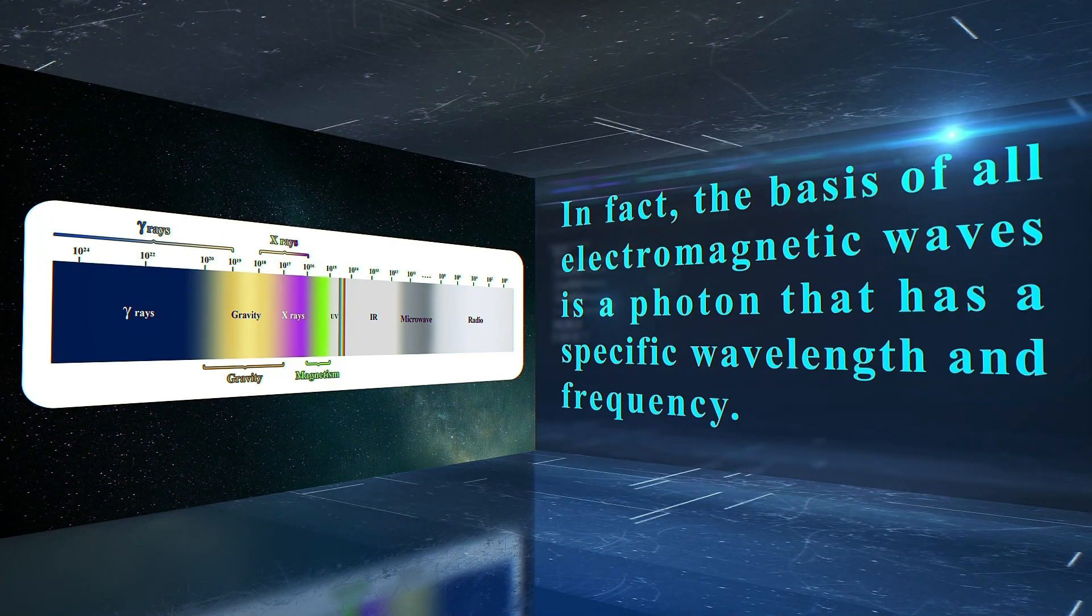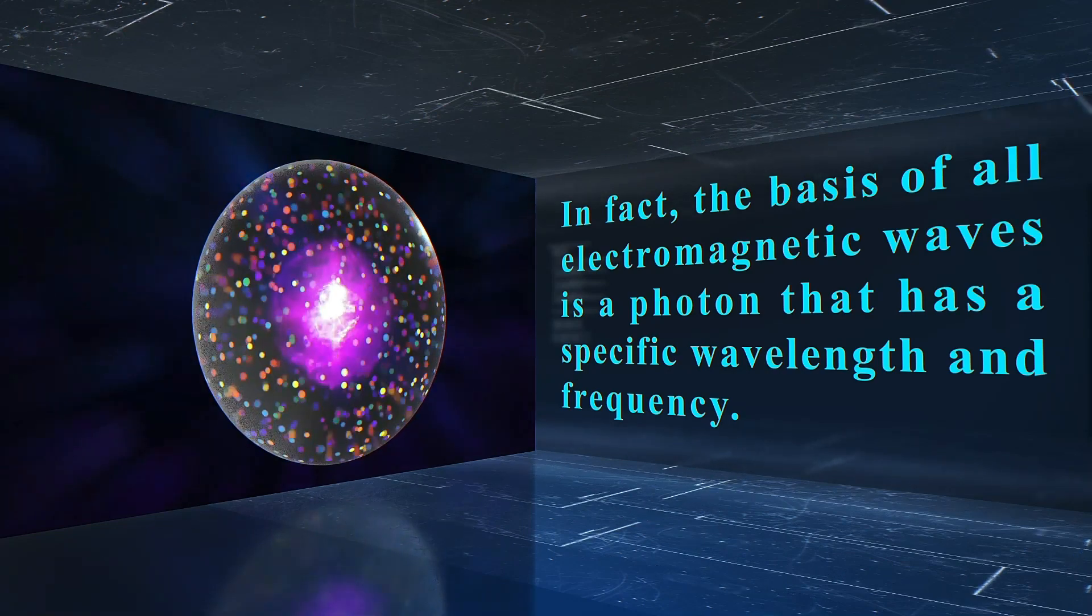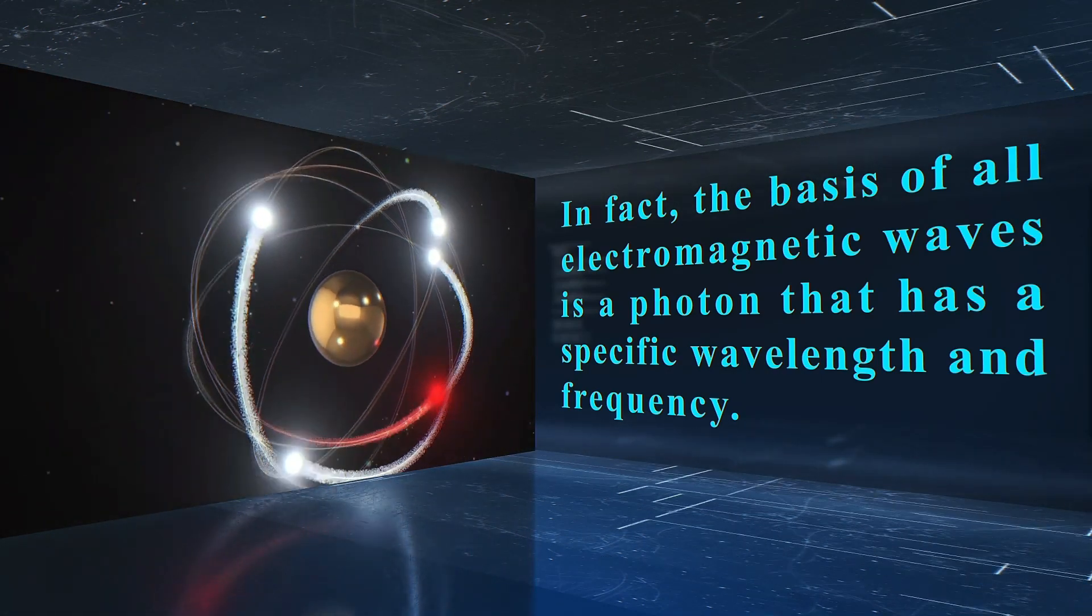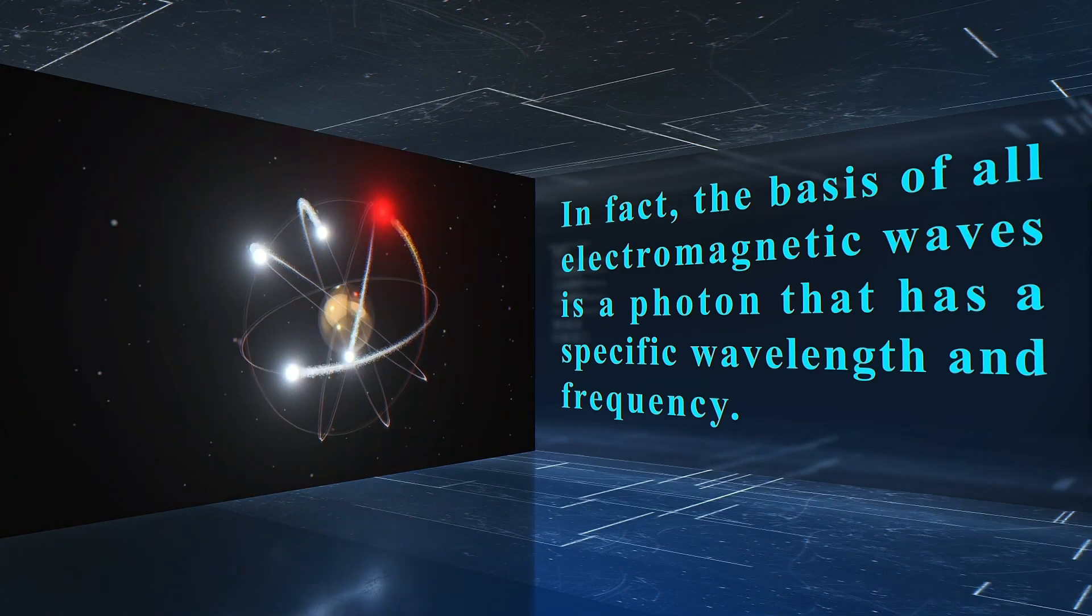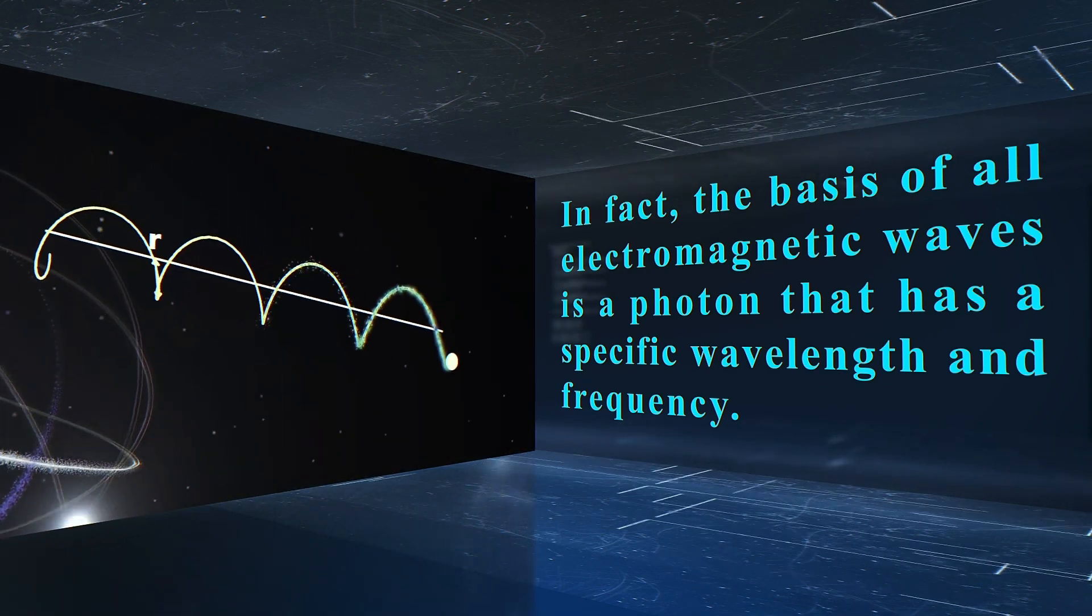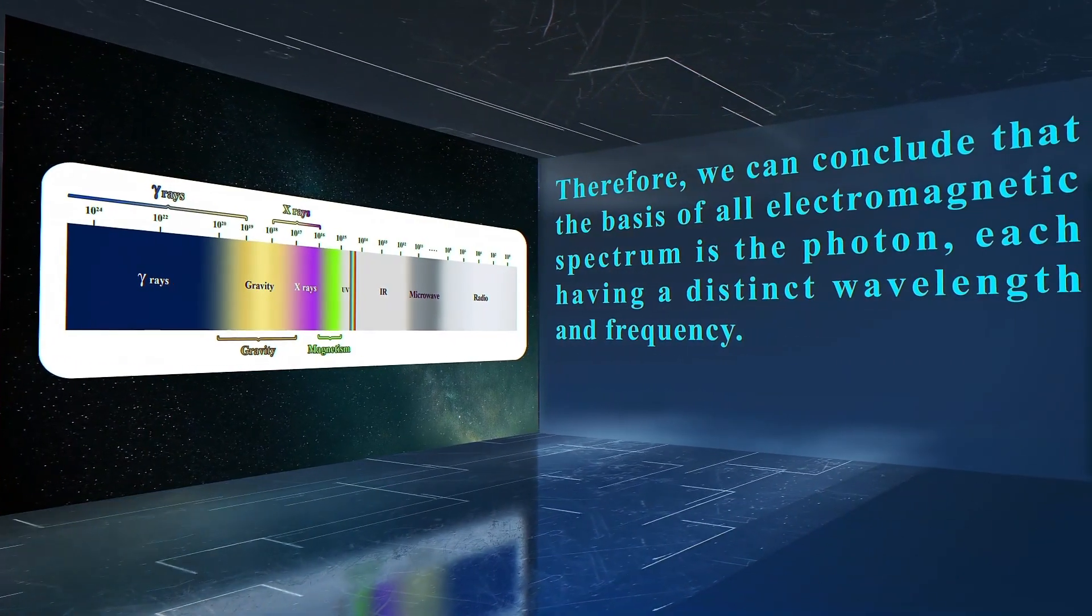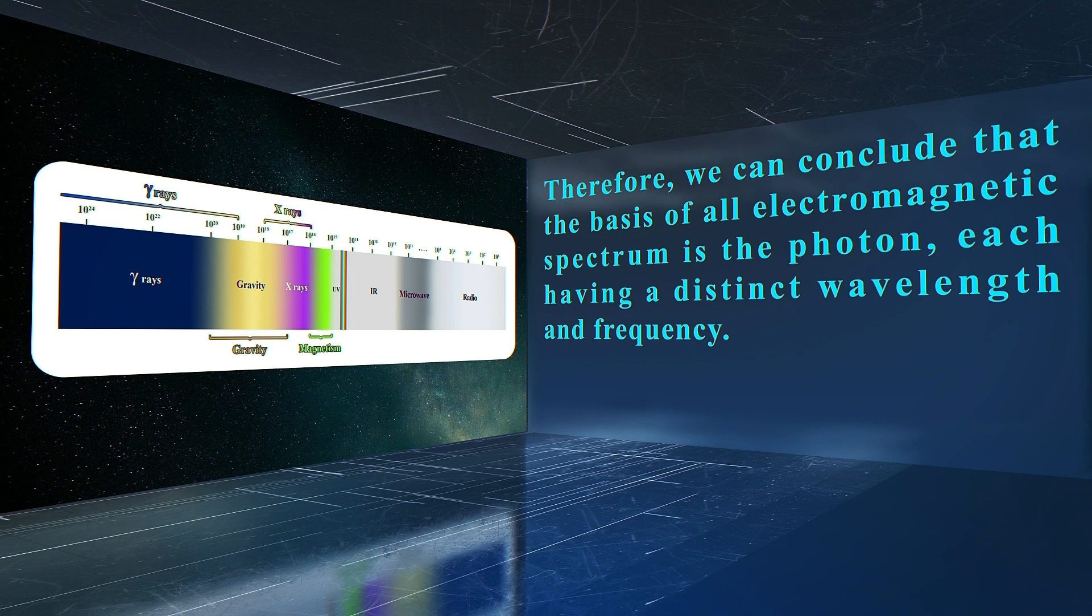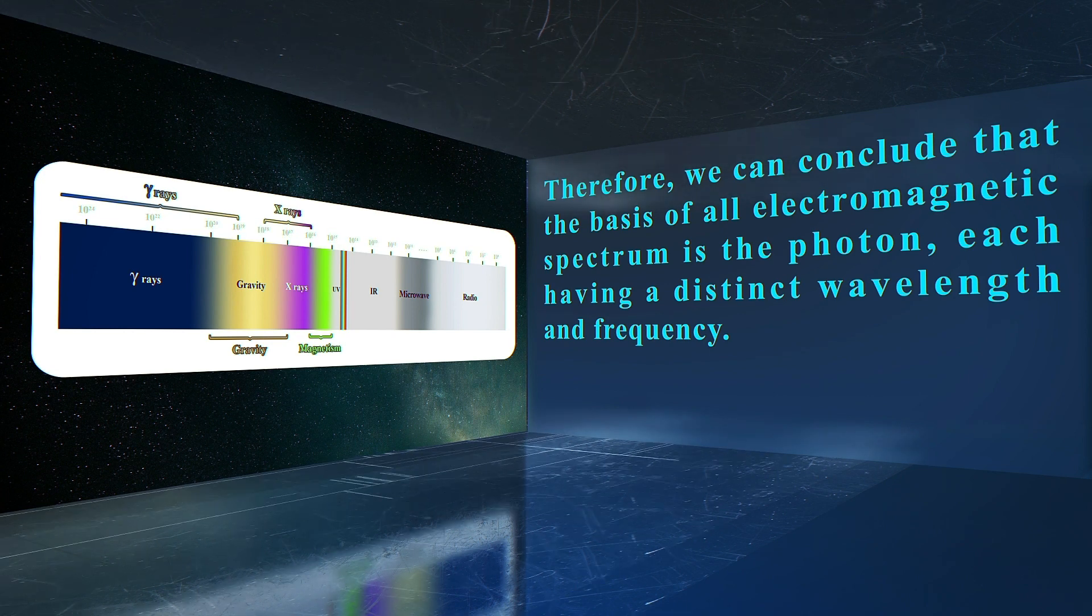In fact, the basis of all electromagnetic waves is a photon that has a specific wavelength and frequency. Therefore, we can conclude that the basis of all electromagnetic spectrum is the photon, each having a distinct wavelength and frequency.